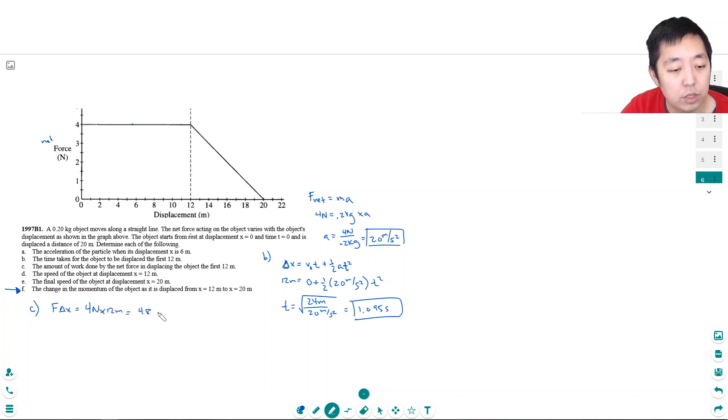Part D: the speed of the object at displacement x equals 12 meters. Well, its final velocity is just simply initial velocity plus acceleration times time. I know its initial velocity was 0, acceleration was 20 meters per second squared, and the time was 1.095 seconds. So that's 21.9 meters per second.